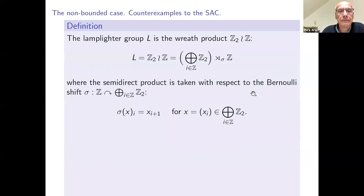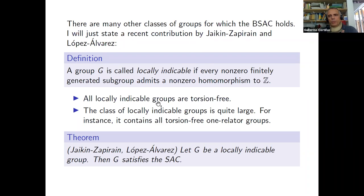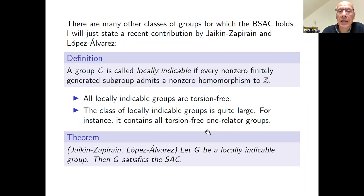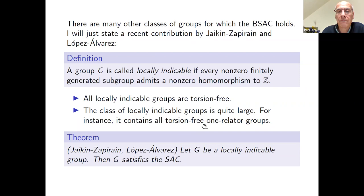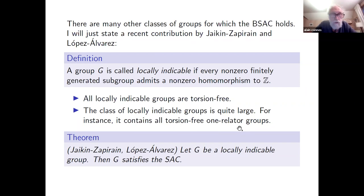Now we move to the non-bounded case, which has a counterexample: the Lamplighter group. This group is the wreath product of Z/2Z with Z — a semidirect product of the direct sum (indexed over the integers) of copies of Z/2Z, acted on by the integer shift (Bernoulli shift). It can be described by generators t (corresponding to Z) and a_i (for the i-th copy of Z/2Z), with all a_i of order 2, the a_i commuting with each other, and conjugation by t shifting the index: t a_i t^{-1} = a_{i-1}. The group is finitely generated by t and a_0.